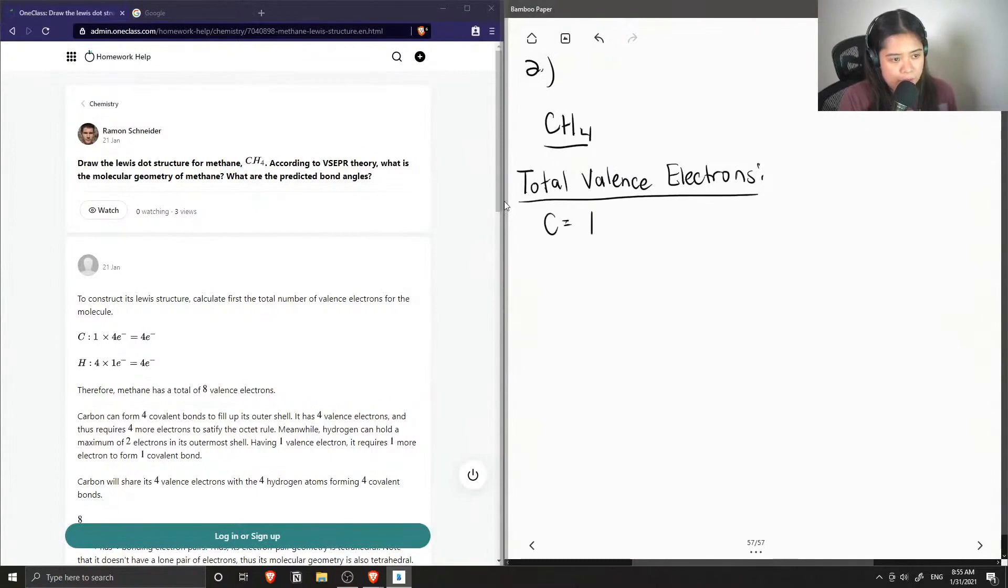Carbon has four valence electrons, and hydrogen has one. Since there are four hydrogen atoms, we multiply by four, giving us a total of eight valence electrons.